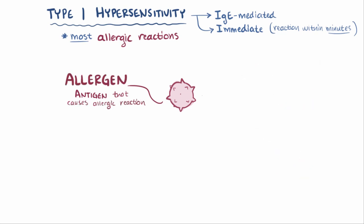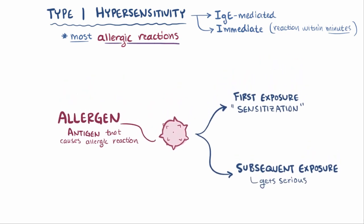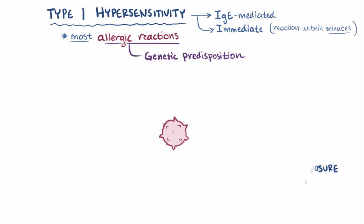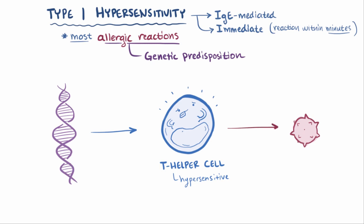An allergic reaction happens in two steps, a first exposure or sensitization, and then a subsequent exposure, which is when it gets a lot more serious. People that react to these allergens usually have a genetic predisposition to having overreactions to unknown molecules or allergens. This means that these people have certain genes that cause their T helper cells to be more hypersensitive to certain antigens. Since the production of these T helper cells is genetically linked, allergies to things tend to run in families.